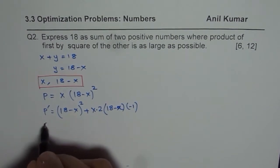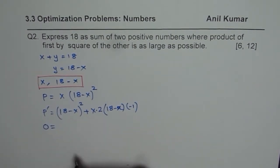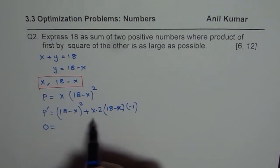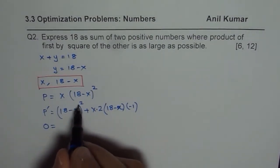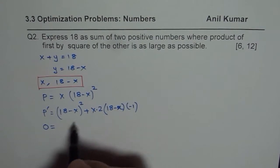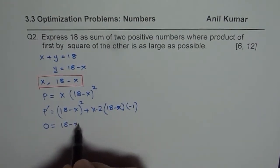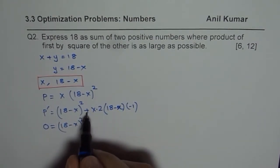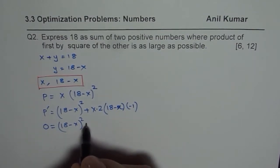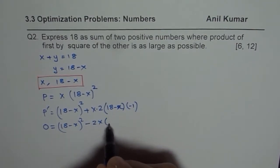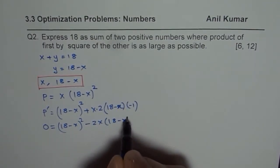Now this should be 0 for maximum or minimum. So we have 18 minus x whole square and plus and minus is minus so we write minus 2x times 18 minus x.